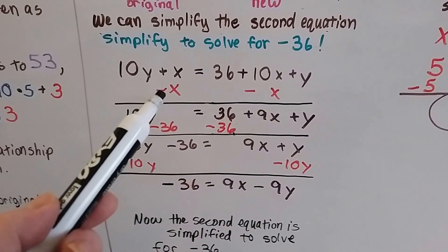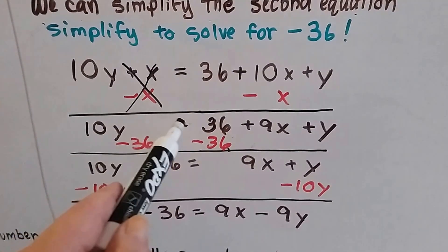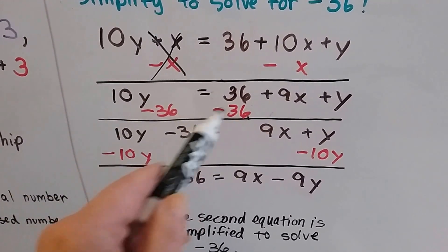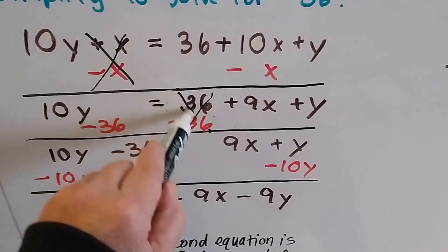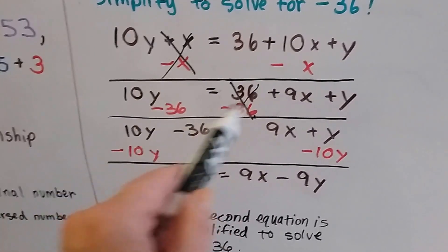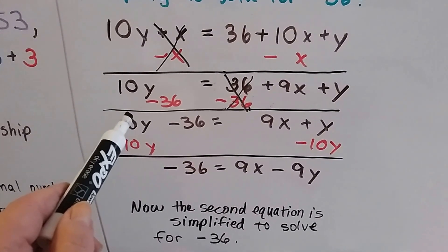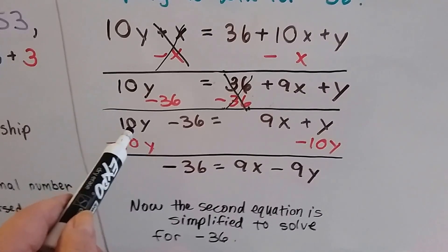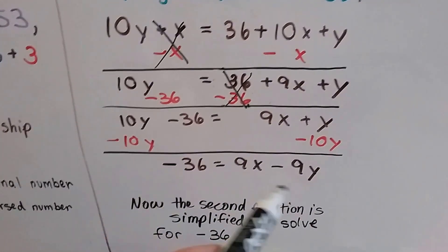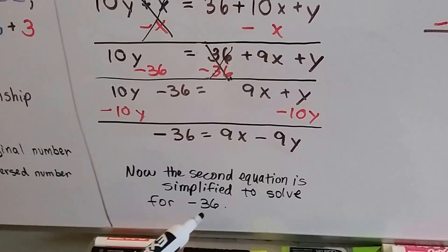So we start by taking away x from both sides — that turns this into a zero pair. Now we have 10y equals 36 plus 9x plus y. Now we take the 36 away from both sides, which creates a zero pair and makes it negative on this side — exactly what we wanted. We want to solve for negative 36. Then we take away 10y from both sides, and we end up with 9x minus 9y equals negative 36. So the second equation is simplified and solved for negative 36.